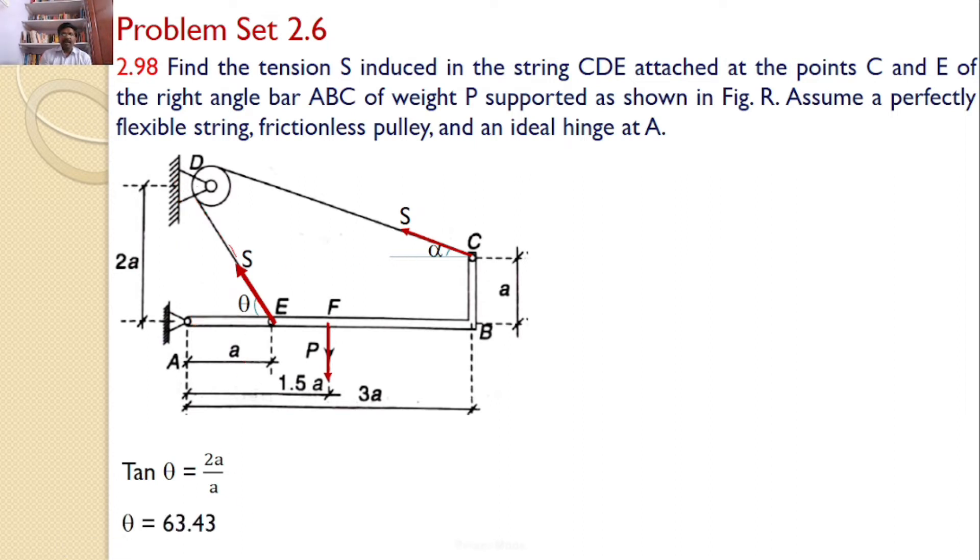Similarly, by constructing a small triangle here, this distance is equal to 3a and this distance is equal to 2a minus a that is a. Hence you can say tan alpha is equal to opposite side a divided by the adjacent side 3a which gives the value of 18.43.